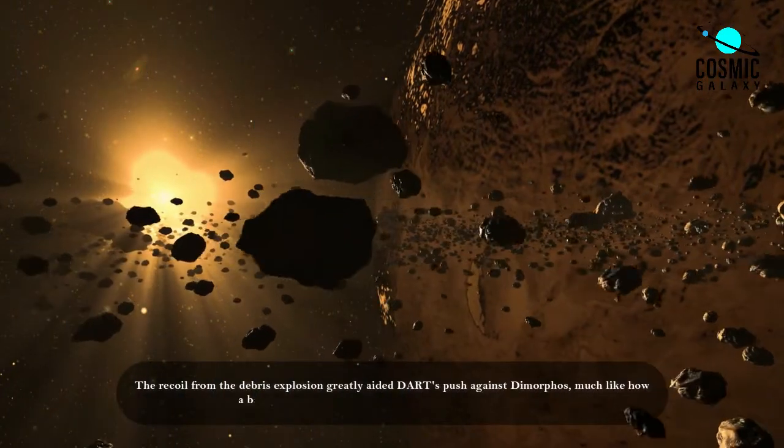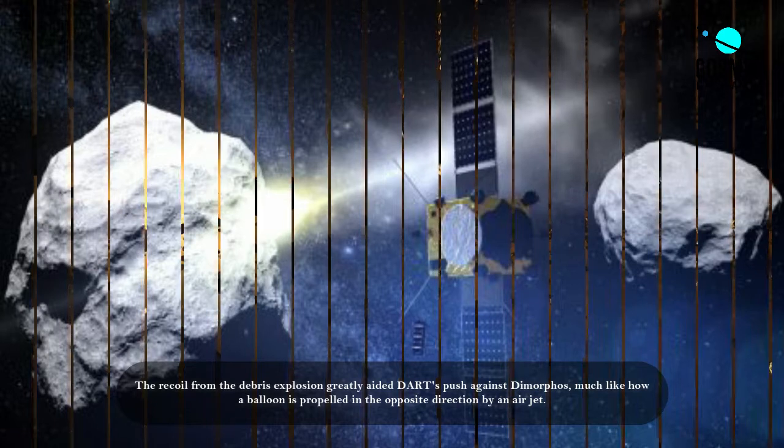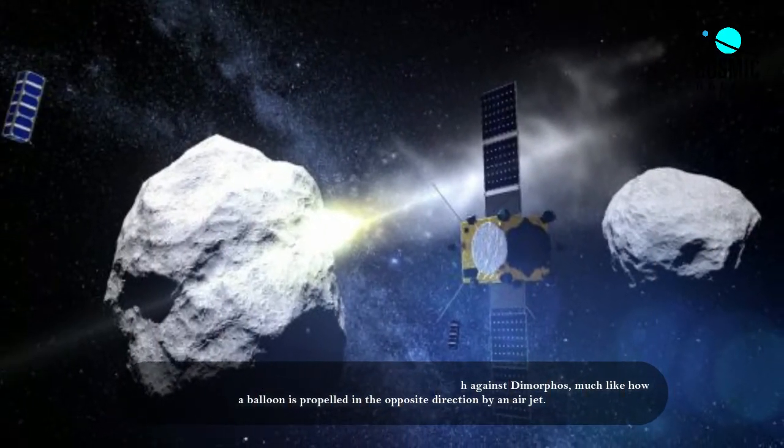The recoil from the debris explosion greatly aided DART's push against Dimorphos, much like how a balloon is propelled in the opposite direction by an air jet.